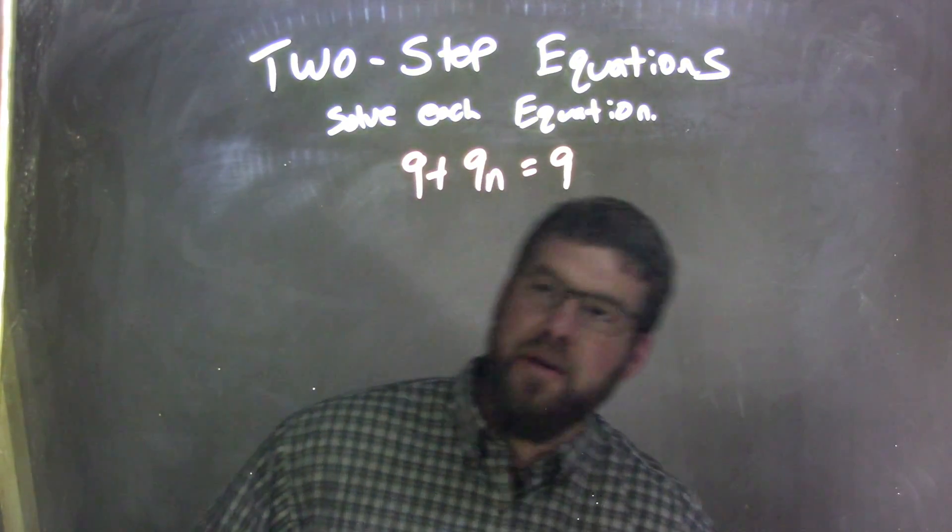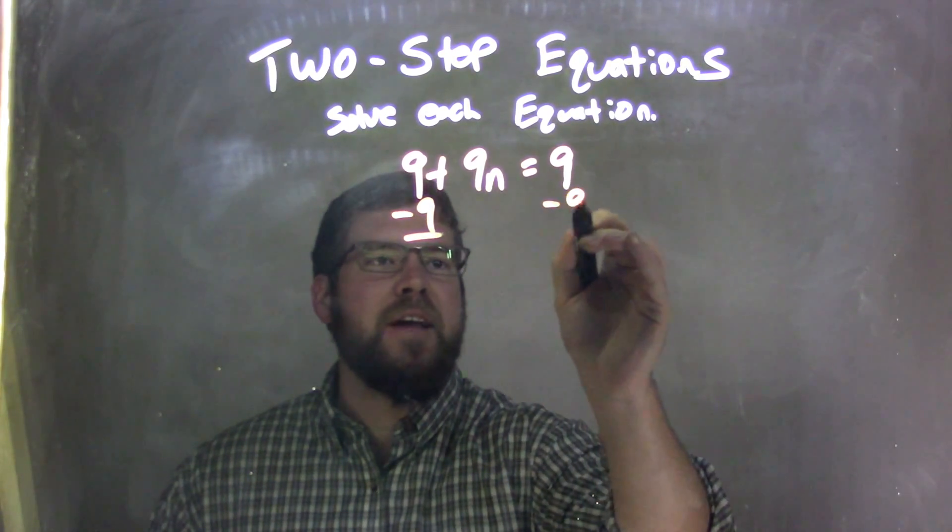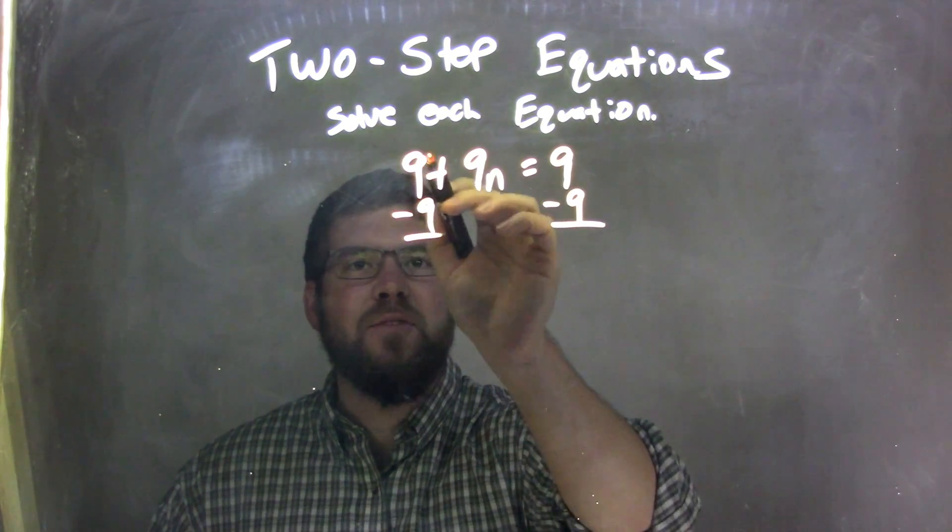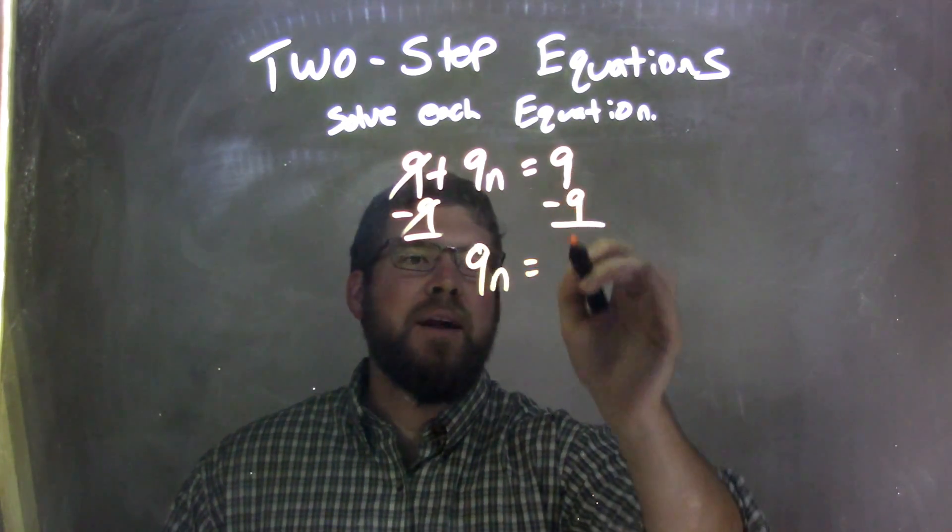Well, my first step here is, I see there's a positive 9. I'm going to subtract a 9. That's how I can get rid of that positive 9 right there. I subtract a 9 from both sides. That cancels out, leaving me with just 9n here, and 9 minus 9 is 0.